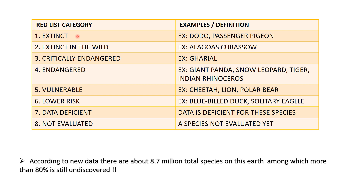Second one is Extinct in the Wild. This means exhaustive surveys have been conducted in known or expected habitats, but no record of individuals could be found - koi record nahi mila related to them. Example is Alagoas Curassow - it's like a glossy black bird formerly found in Brazil. So yeh uska example hai.